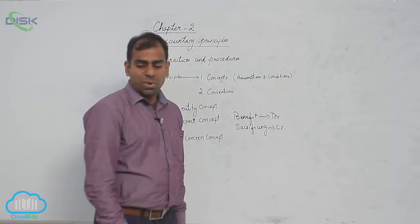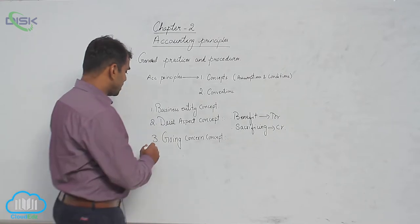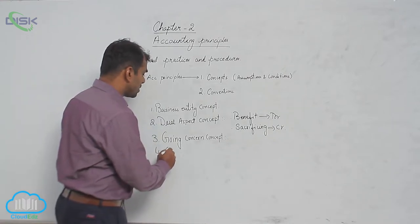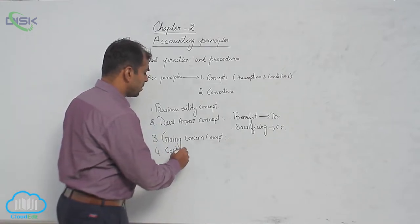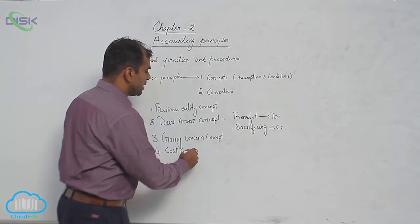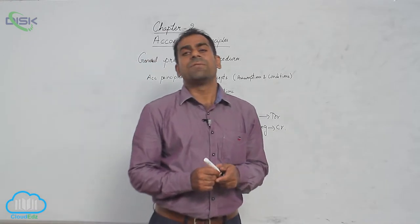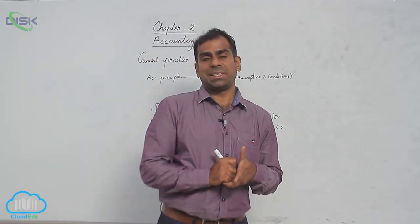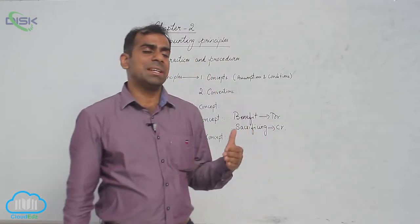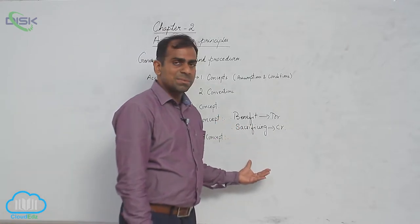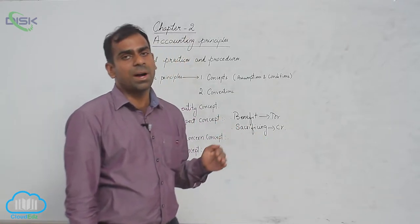Now coming to what is next concept, that is cost concept. Cost concept, as just now we distinguish the expenditure which gives us benefit for more than one year is capital expenditure and capital expenditure is in simple terms called as assets acquired.